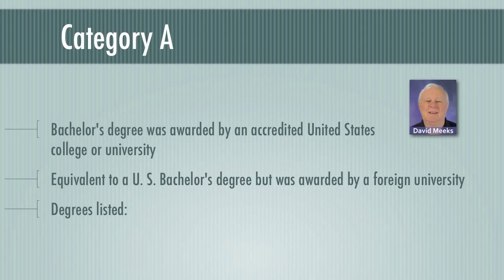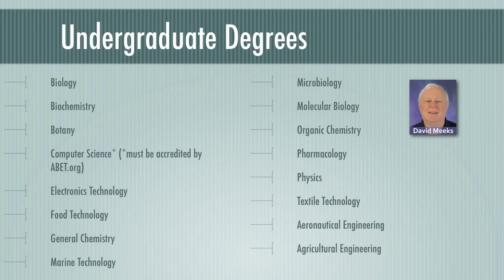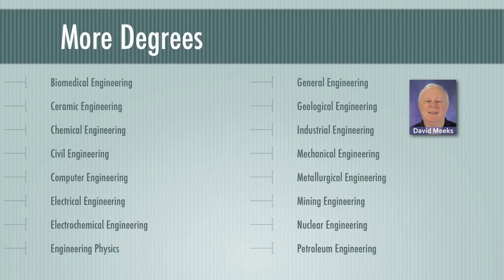There are 32 qualifying degrees. The next slide shows the first 16 degrees — I don't expect you to go over all of those, but they are all listed in the registration bulletin. It starts with biology, and the very last one is petroleum engineering. So again, they're all listed in the General Requirements Bulletin.